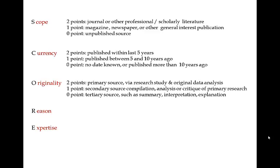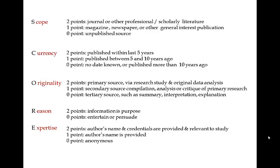When determining the originality of a source, look at how the information was learned. If the material was acquired through a research study and analysis of original data, it is primary research and the article gets two points. If the article compiles, critiques, or analyzes information mainly from primary sources, then the article gets one point. Zero points are awarded for tertiary research, which usually interprets, explains, or summarizes secondary research. If the article's purpose is to inform, add another two points to the score; if the purpose is to entertain or persuade, zero points are awarded. When assessing the author's expertise, award two points if the author's name and credentials are provided and relevant to the topic, one point if the author's name is provided, and zero points if written anonymously. Remember, there are corporate authors, and their credentials are important as well.